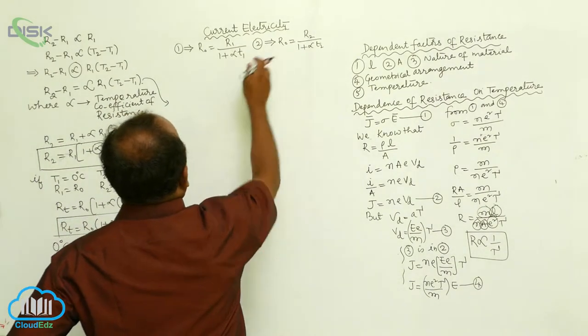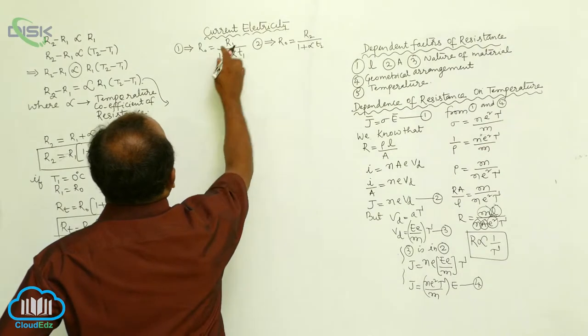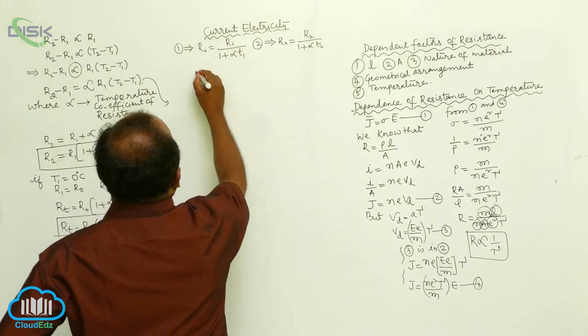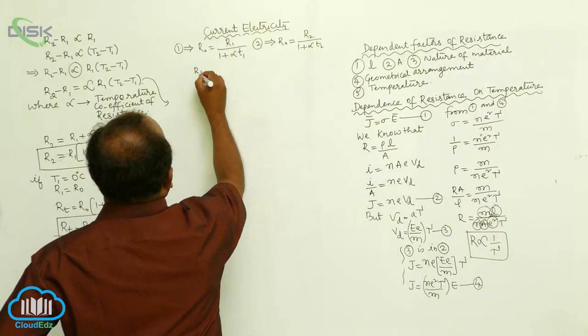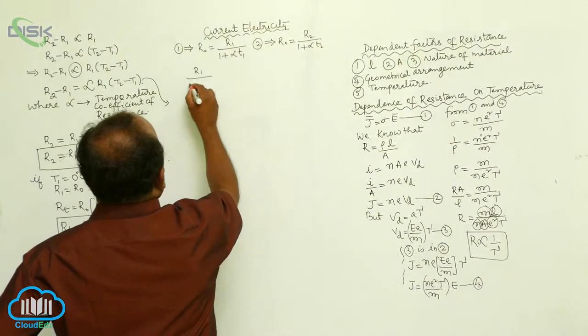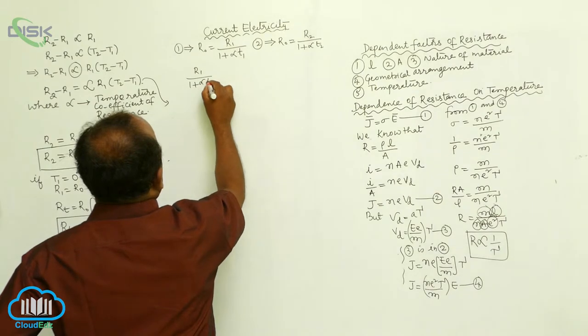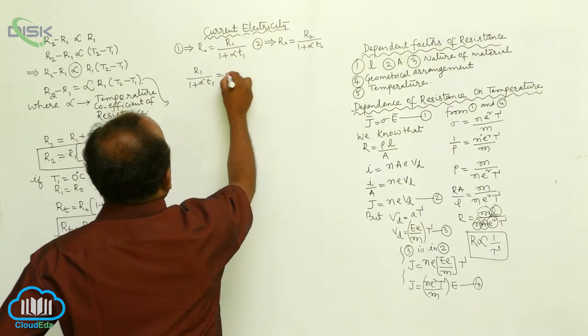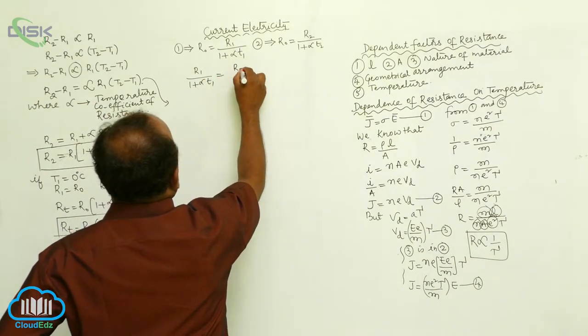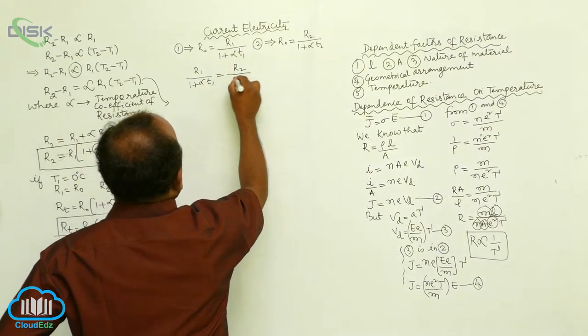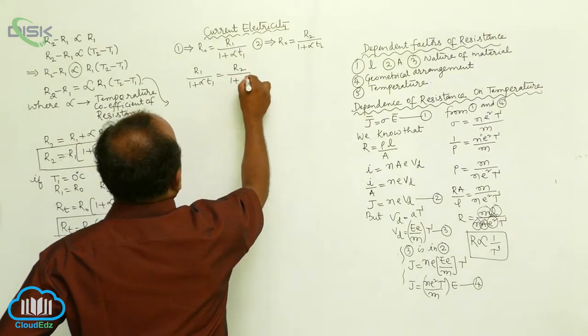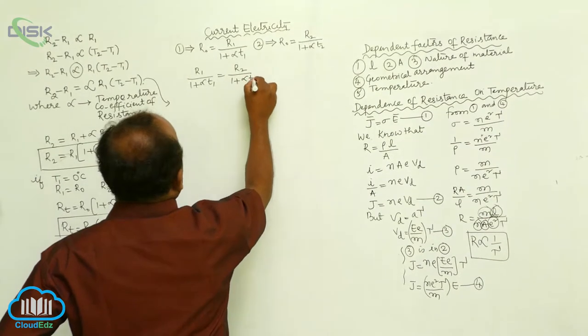Since the left-hand side R0 is the same, therefore from these two equations: R1 by one plus alpha T1 is equals to R2 by one plus alpha T2.